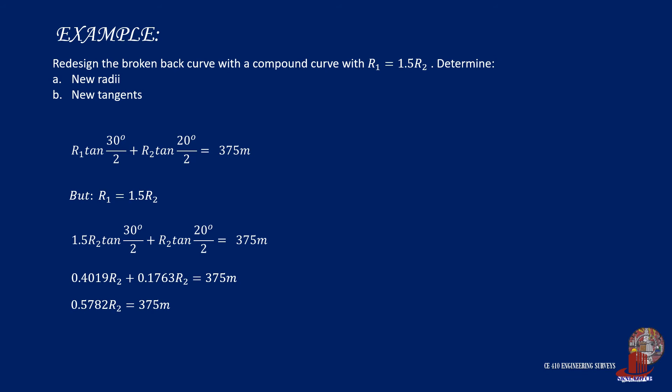Thus, we can solve for the second curve's radius as 648.56 meters. And by using this value into the given proportion, we get the first curve's radius as 972.85 meters.